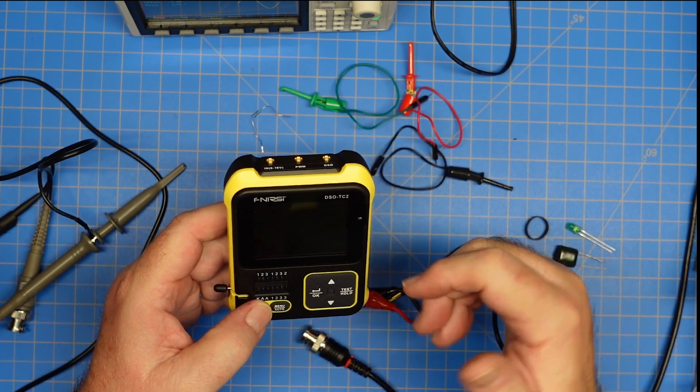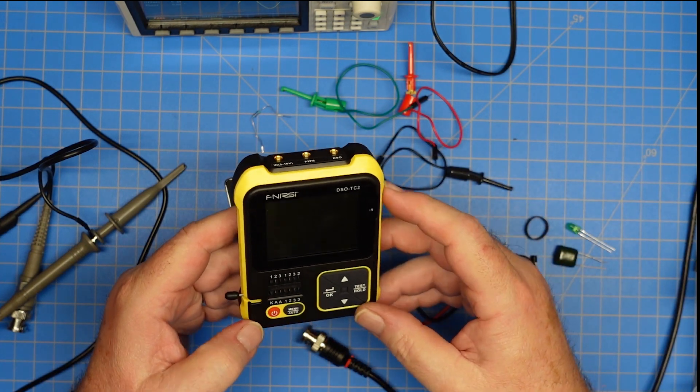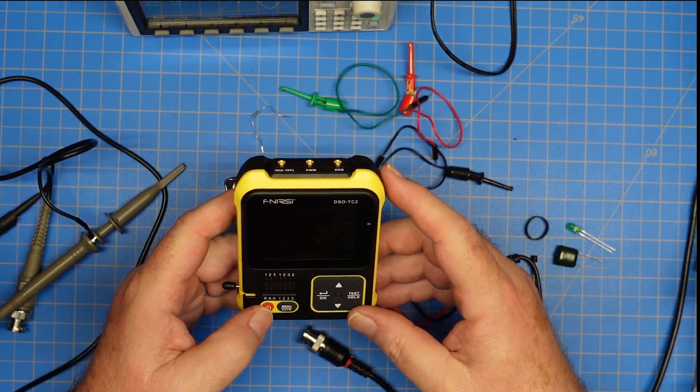That it has an oscilloscope is kind of a bonus function. It has a DVM in it. Also a bonus function. So that's pretty neat. And I don't expect much for $50.